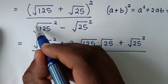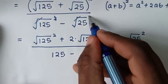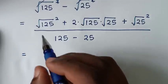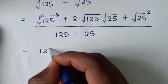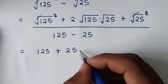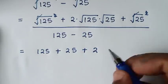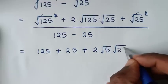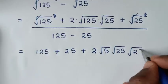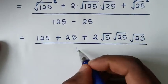In the denominator, the square roots cancel their squares, giving 125 minus 25, which equals 100. In the numerator, the squares resolve: 125 plus 25, plus 2 times square root of 125 (rewritten as square root of 5 times square root of 25) times square root of 25, over 100.